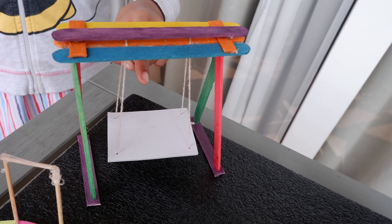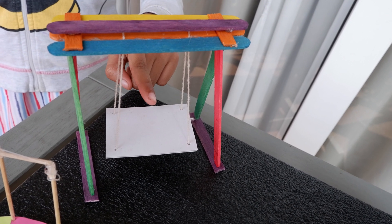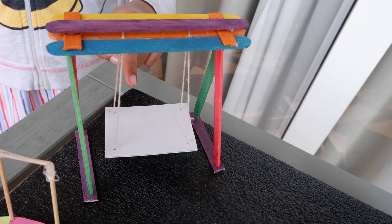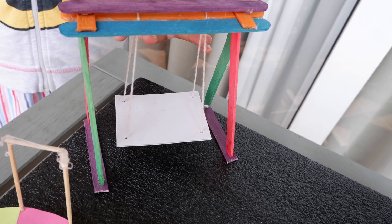Look at this swing. The seat of the swing is shaped like a rectangle. Like I told you before, it has four corners and four sides.